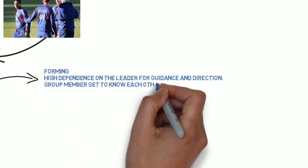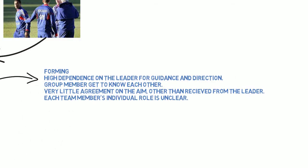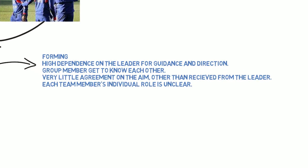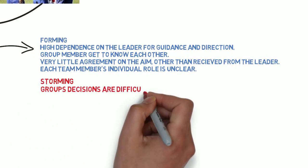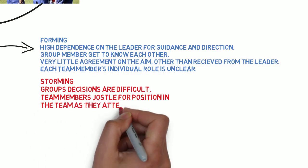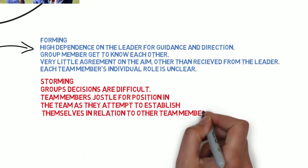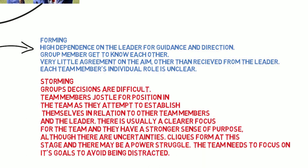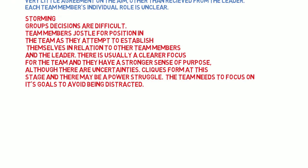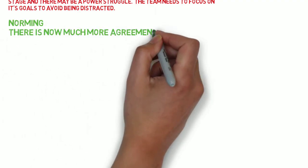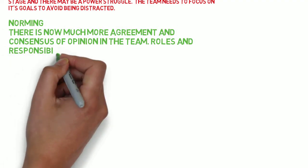In the forming stage, there's a lot of dependence on the leader for guidance about the values and ideas behind the team. Each team member usually still feels like an individual. Then you normally go through a storming phase, where group decisions are quite difficult. People are jostling for position and the team are trying to establish themselves, working out who the leaders are, and usually developing quite a lot of conflict.